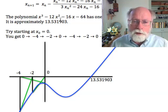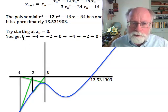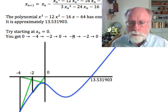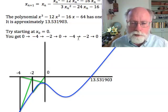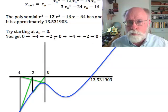So if you start with this polynomial at 0, you'll go 0, minus 4, minus 2, 0, minus 4, minus 2, 0. And you will just continue in that cycle of 3 numbers and you will not get convergence to the root at all.